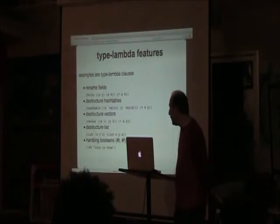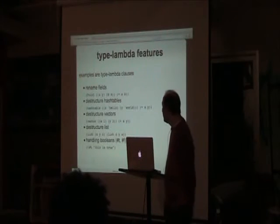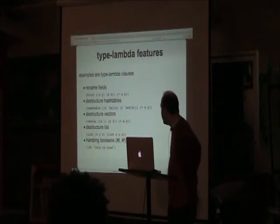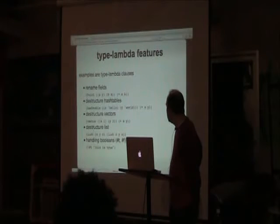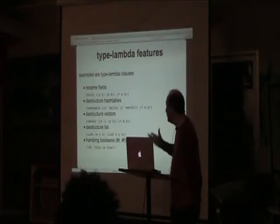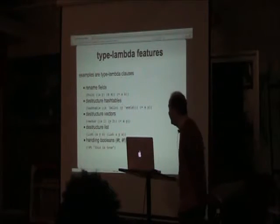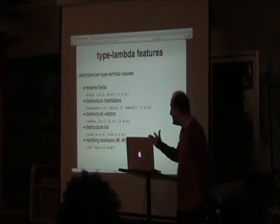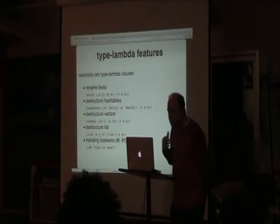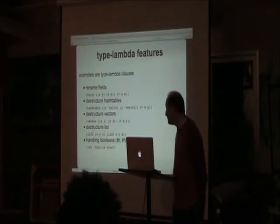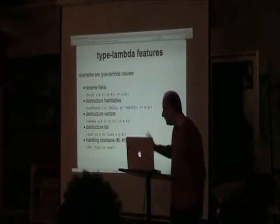You can also use the same system to deconstruct what I'd call primitive types that don't follow the data type library. You can deconstruct hash tables and vectors. You can destructure a list, which basically calls lambda again. You can also do booleans — if the value in the type-lambda was true, it'll match that.